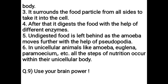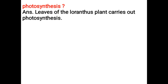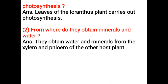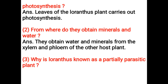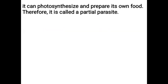Use your brain power. Which part of the Loranthus plant carries out photosynthesis? Leaves of the Loranthus plant carry out photosynthesis. From where do they obtain minerals and water? They obtain water and minerals from the xylem and phloem of the other host plant. Why is Loranthus known as a partially parasitic plant? Loranthus takes shelter on the host tree, sucks the water and minerals from the host, but it can photosynthesize and prepare its own food. Therefore, it is called a partial parasite.